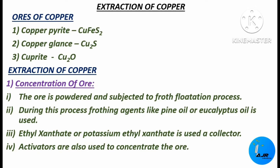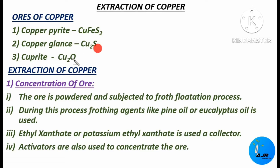Before seeing the extraction of copper, you should be aware of the different types of ores of copper. The first ore is copper pyrite, that is CuFeS2. The second one is copper glance, that is Cu2S, and the next one is cuprite, that is Cu2O.